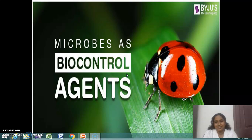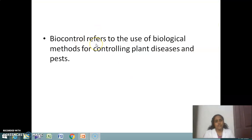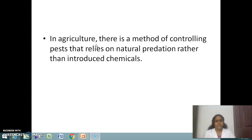There are different methods to remove pests and disease-causing organisms. Nowadays, different farmers are using different types of chemicals, but these kill our soil. An important way to get rid of this is the use of biocontrol agents. Biocontrol refers to the use of biological methods for controlling plant diseases and pests. In agriculture, there is a method of controlling pests that relies on natural predation rather than introduced chemicals.